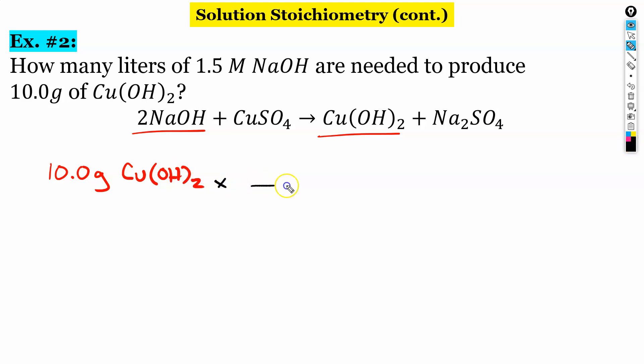So we have 10 grams of Cu(OH)2. And we're going to need two steps here. So we're going to have to use our molar mass to get moles. And then we'll do all mole ratio. So molar mass is 97.57 grams of Cu(OH)2. That's how many grams are in one mole of Cu(OH)2. And then our mole ratio is, for every one mole, we have two moles.